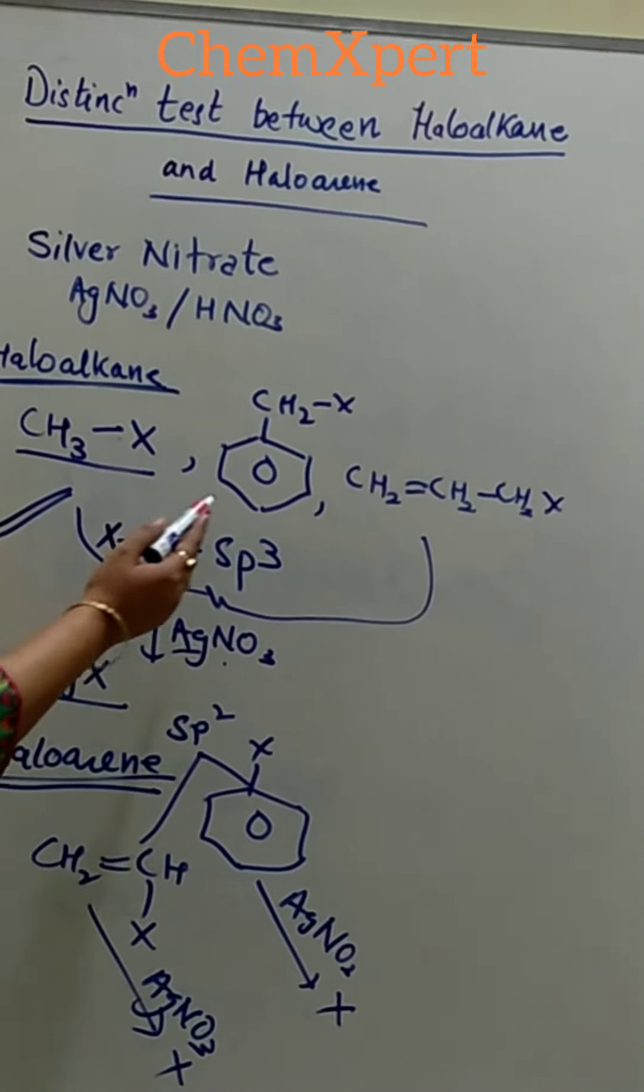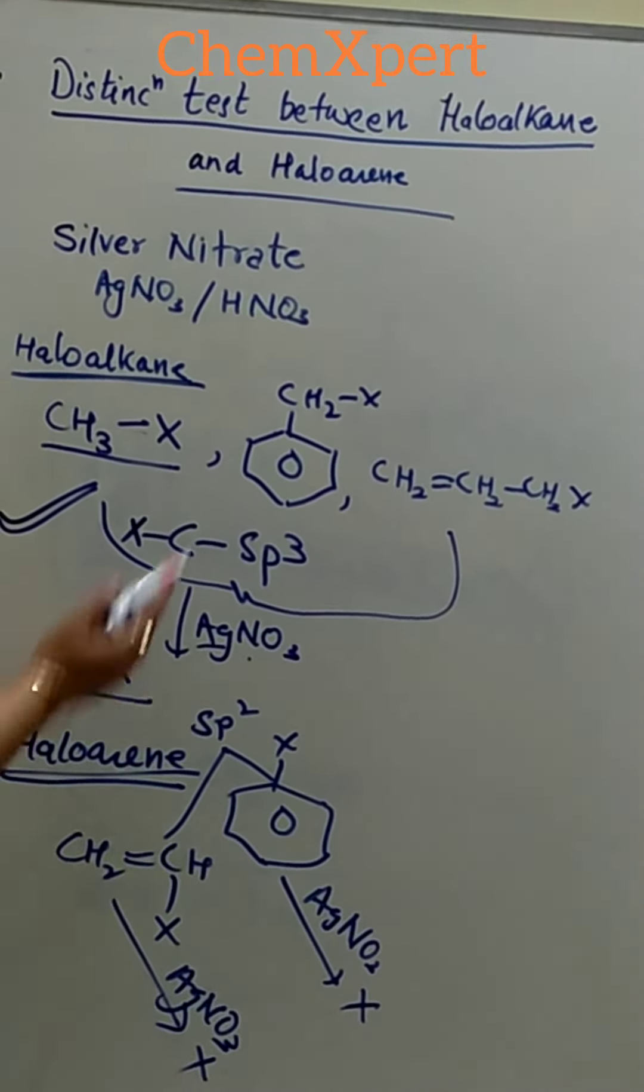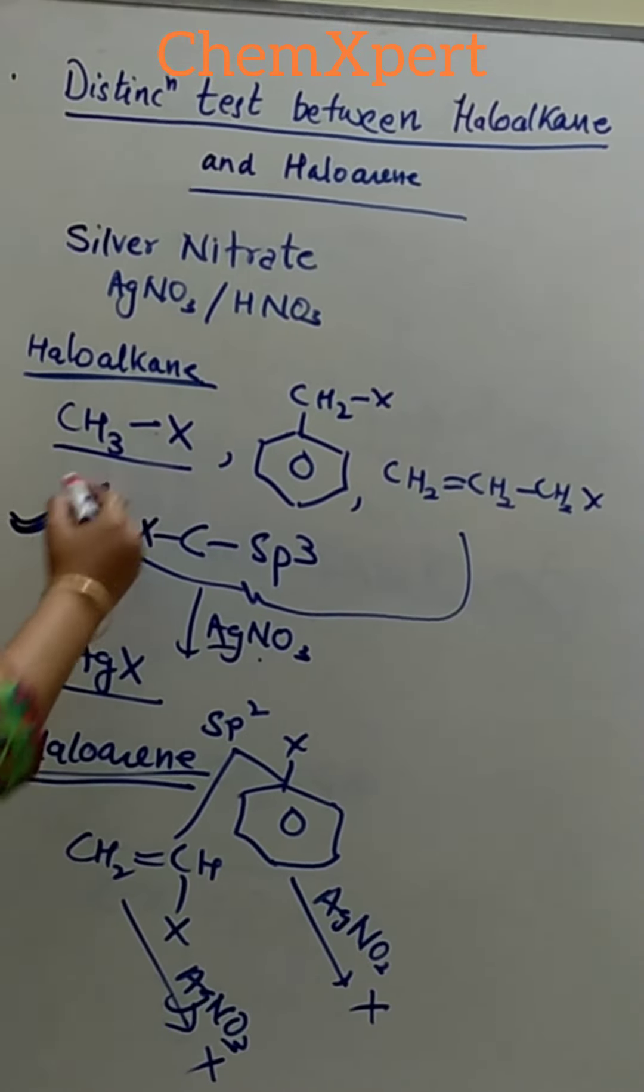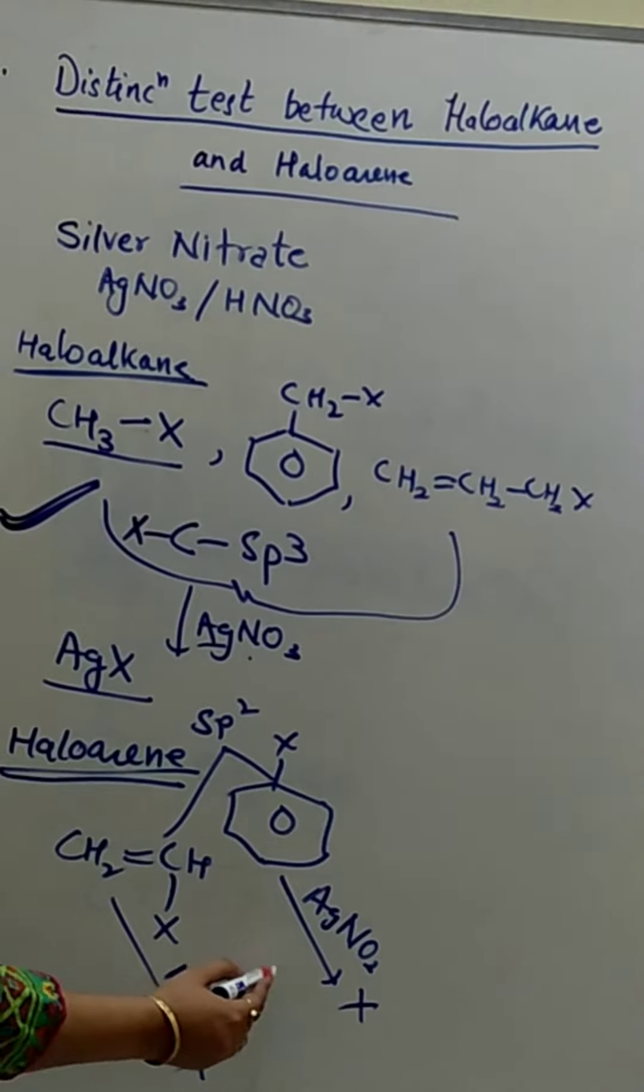Similarly, if we are given benzyl chloride and chlorobenzene, then benzyl chloride will give this test, but chlorobenzene will not give any precipitate.